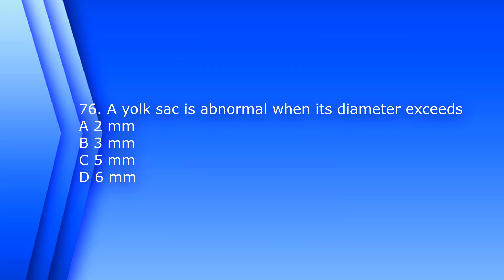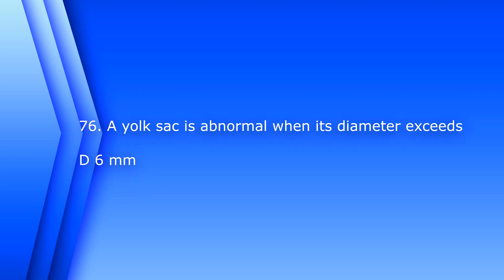Question 76. A yolk sac is abnormal when its diameter exceeds? A. 2 mm. B. 3 mm. C. 5 mm. D. 6 mm. The answer is D, 6 mm.